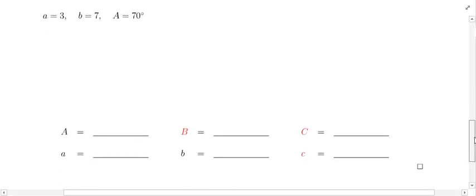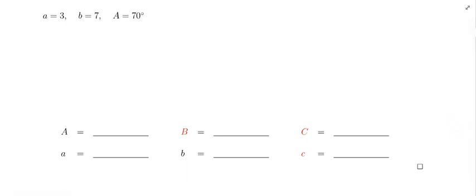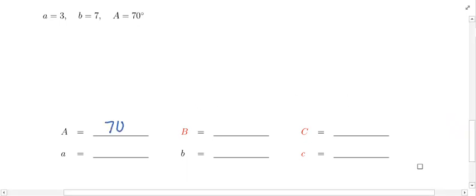If you scroll to the bottom, I have blanks that we can fill in. Notice the stuff in red is what we need to find. We know angle A is 70 degrees, side length a is three, side length b is seven. We need to find angle B, angle C, and side length C.